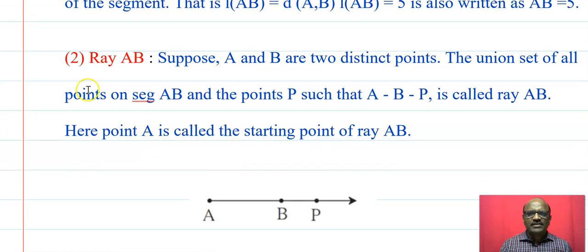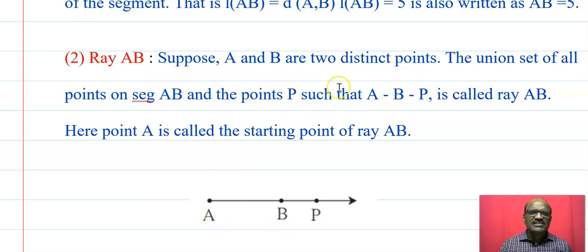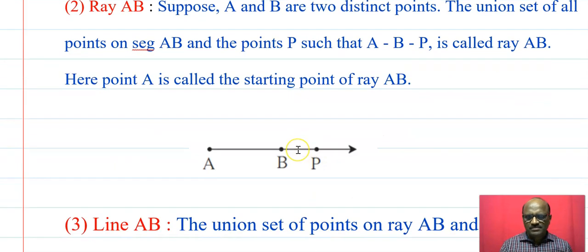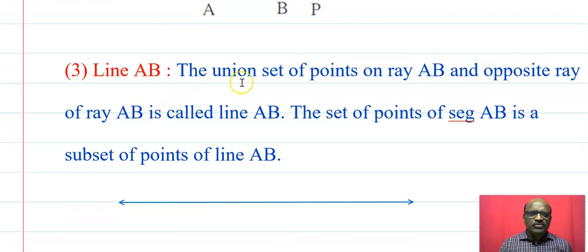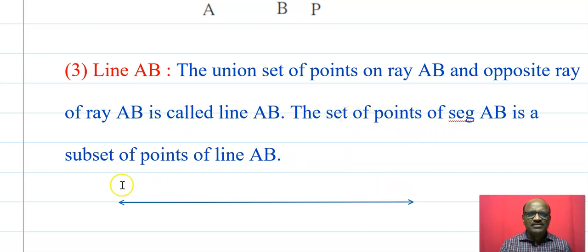Next, the definition of ray. Suppose A and B are two distinct points. The union set of all points on segment AB and points B such that A-B-B' is called ray AB. Here A is called the starting point of ray AB. The union set of points on ray AB and its opposite ray is called line AB. The set of points on segment AB is a subset of points of line AB.